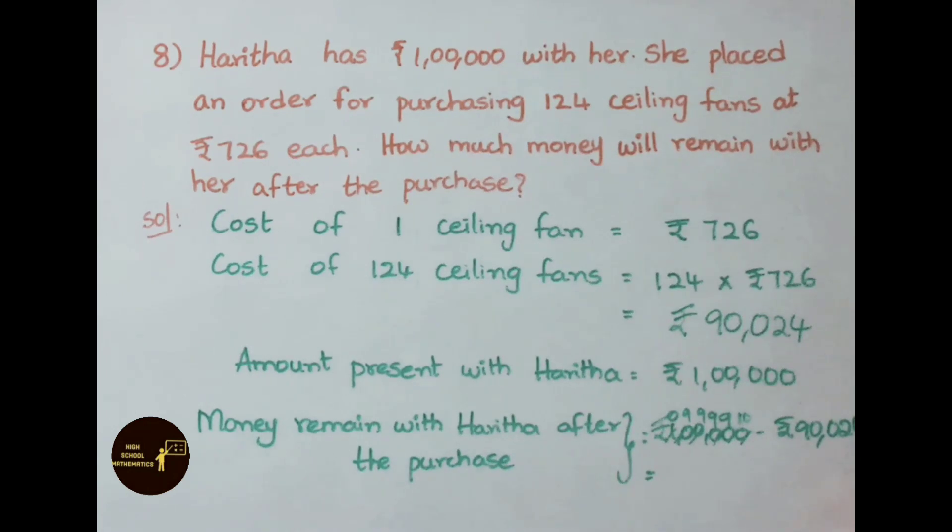See now. 10 minus 4 is 6, 9 minus 2 is 7, 9 minus 0 is 9, 9 minus 0 is 9, 9 minus 9 is 0. No need to write. So the answer is 9,976. Therefore, money remaining with Haritha after the purchase is 9,976 rupees.